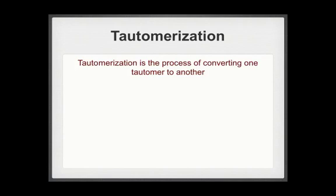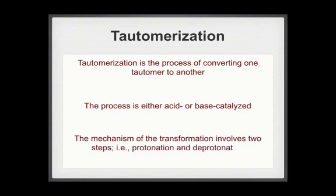Tautomerization is the process of converting one tautomer to another. The process is either acid or base-catalyzed. The mechanism of the transformation involves two steps: protonation and deprotonation. The order of these steps depends on whether the medium is acidic or basic.